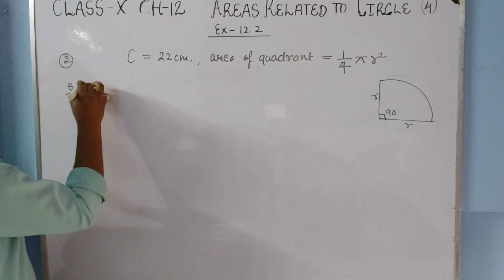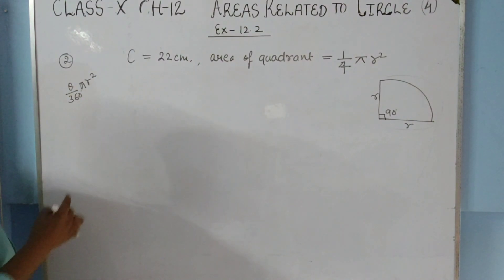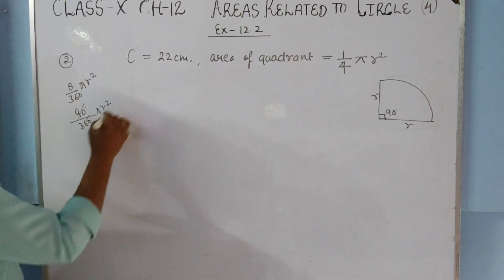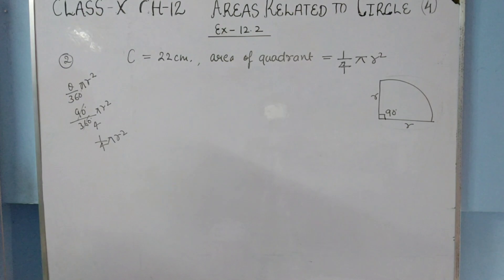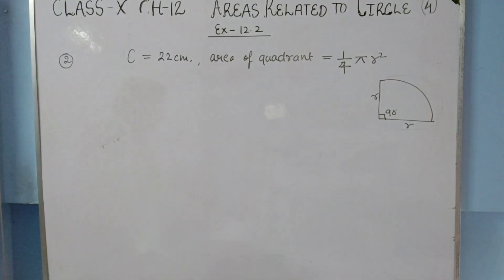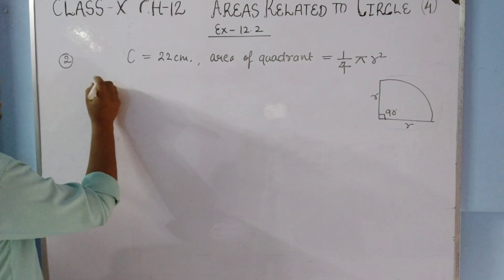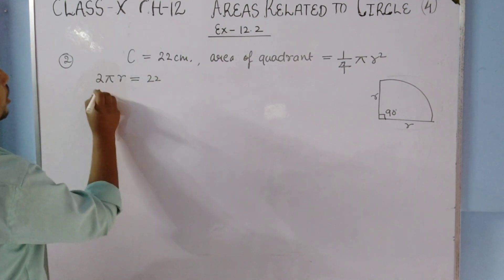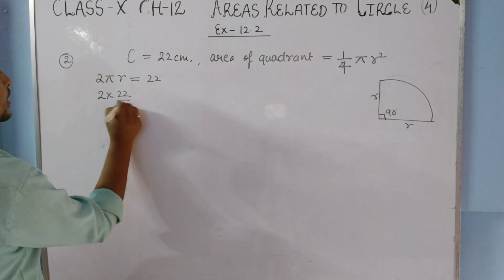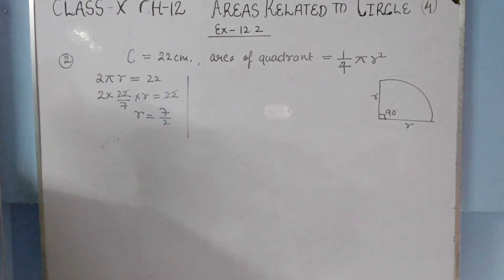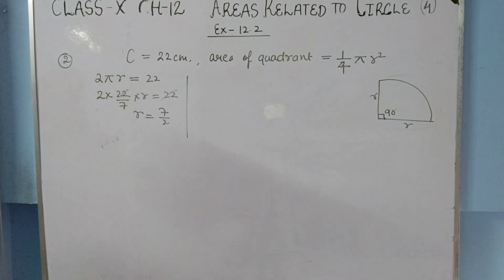Since the quadrant has theta = 90 degrees, the formula gives (1/4)πr². From the circumference C = 2πr = 22, we get 2 × (22/7) × r = 22, so 22 and 2 cancel, giving r = 7/2.